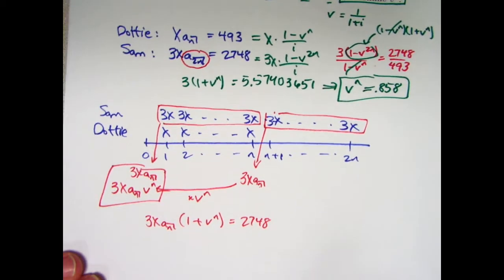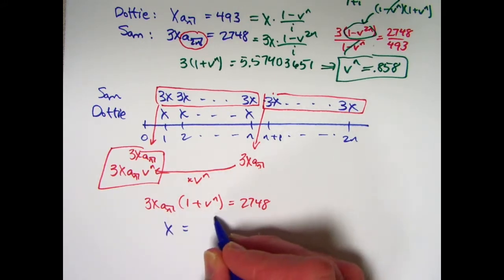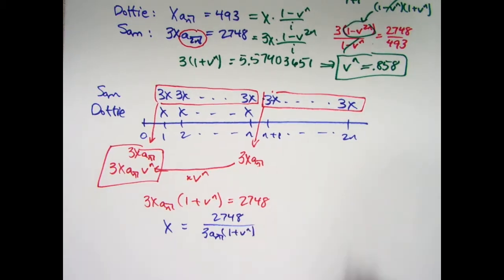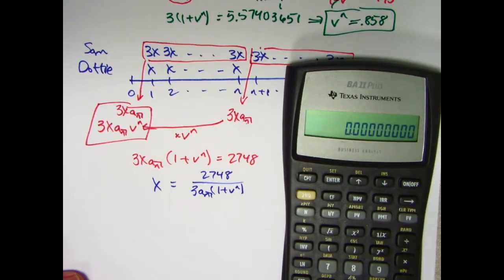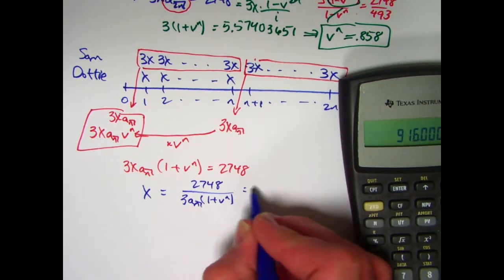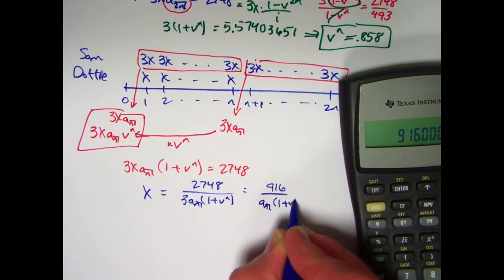Here's how v to the n is coming into play. Now divide both sides by everything here except for the x so that we can solve for x. x is 2748 divided by 3 a n times 1 plus v to the n. 2748 divided by 3 is 916. This is 916 over a n times 1 plus v to the n.